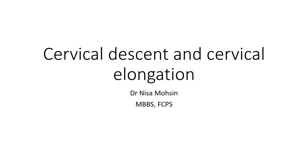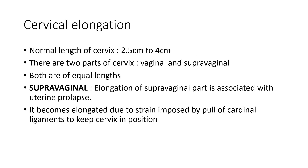Assalamu alaikum. Today's lecture is about cervical descent and cervical elongation — the major differential points between cervical descent and cervical elongation, and how you can differentiate both conditions during examination. If the cervix coming out of the vagina is associated with uterine prolapse, the treatment would be the same. But if it is only cervical elongation with the uterus intact, the treatment would be different.